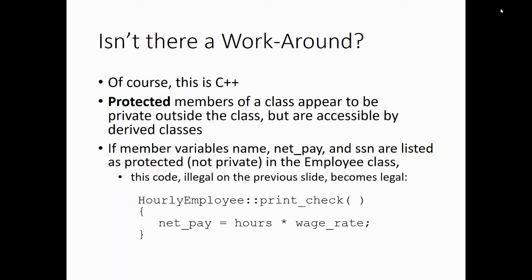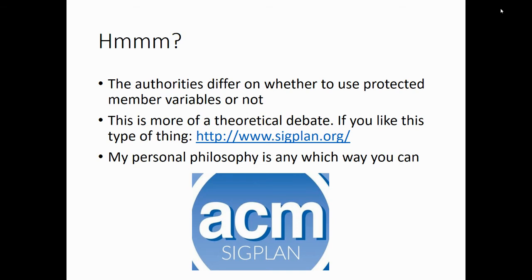C++ provides a workaround called protected. Protected members appear private outside the class within application code, but they're accessible by the derived class — basically it says my kids can access this, but nobody else gets this information. So if member variables net_pay and social_security_number are listed as protected rather than private in the base class, then the illegal code from the previous slide suddenly becomes legal. There are different opinions on whether protected is a good idea; my personal philosophy for this class is: get it working. It's more important to have working code than to have beautiful code that doesn't work.